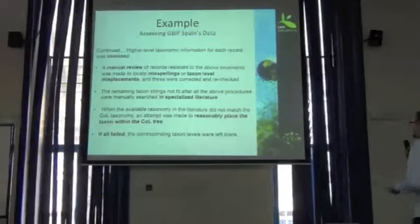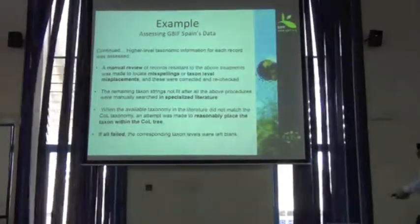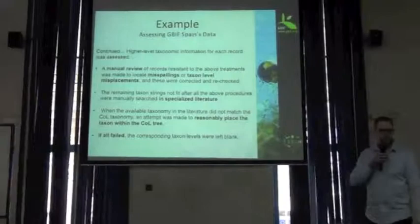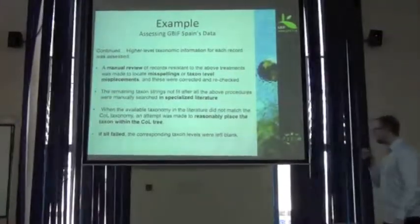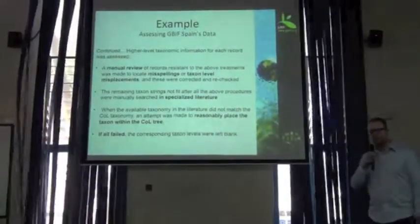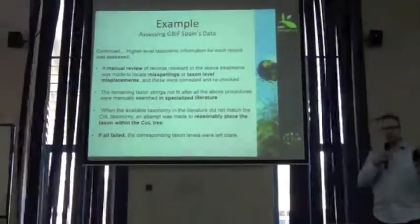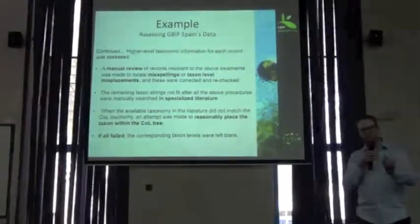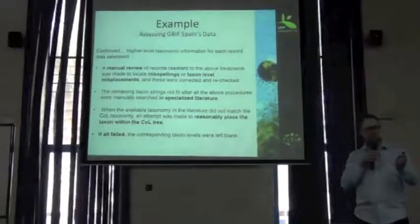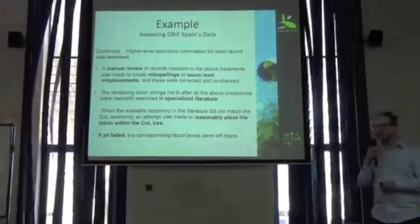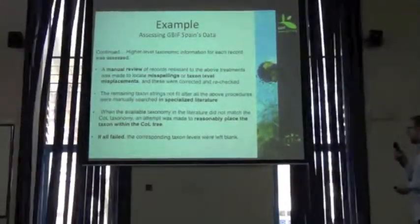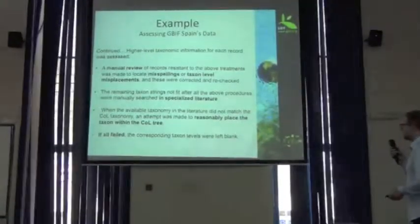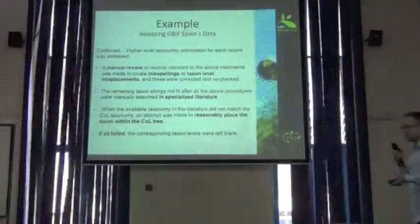Then, the remaining taxonomic strings that again didn't match were searched for in specialized literature. And when the manual taxonomy from the literature wasn't able to match up against the Catalog of Life, an attempt was made to reasonably assess the taxonomic placement. If all that failed, then the corresponding taxonomic strings were left blank.